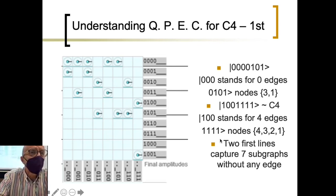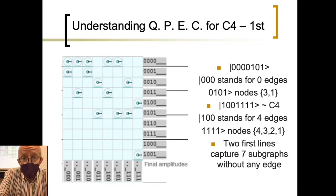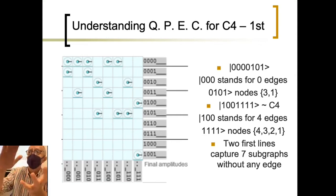So, two first lines capture seven subgraphs without any edge. The three elements, zero, zero, zero, and zero, zero, zero represent exactly all the cases in which we have zero edges. So, this is the independence set of our graph. And even more, we can change on the adjacency matrix one per zero and so on. And what we can get at this level is the number of cliques as a subproduct of this algorithm.